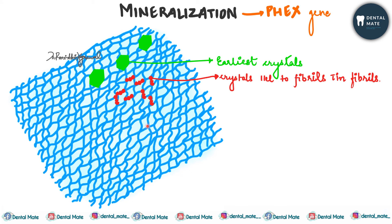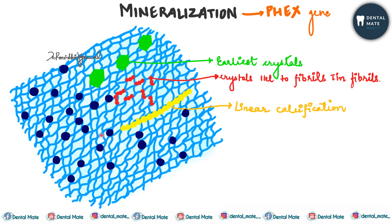The crystals are arranged in rows of 64–65 nanometers striation. Linear calcification also takes place, with deposition of crystals along an uninterrupted front. The principal pattern of this type of mineralization is found in mantle dentine.